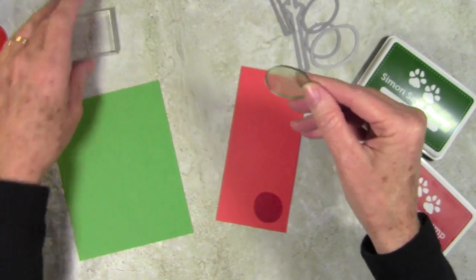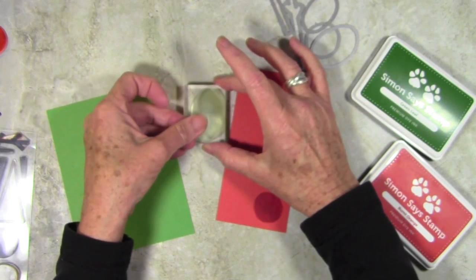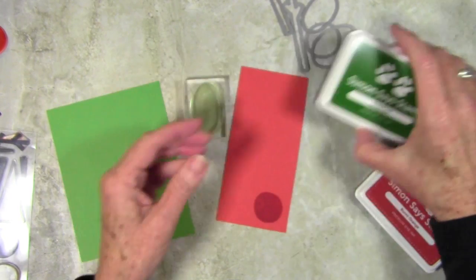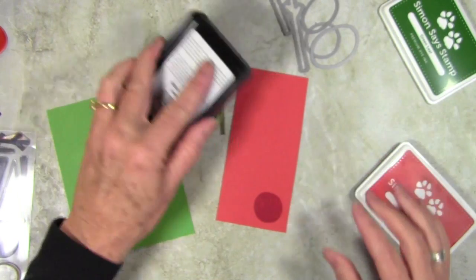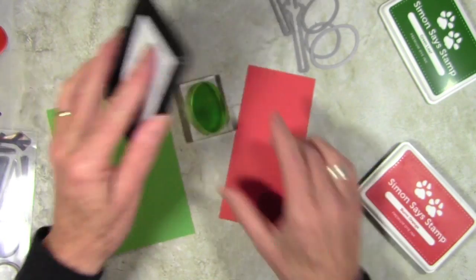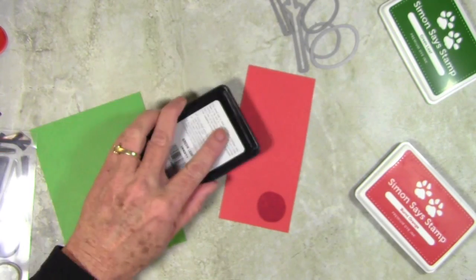Next I'll be moving onto a larger oval and for this one, I'll be using the green leaf ink along with the green leaf card stock. I'll do the same thing again. I'll just ink this up a few times, making sure that I get it really well covered.